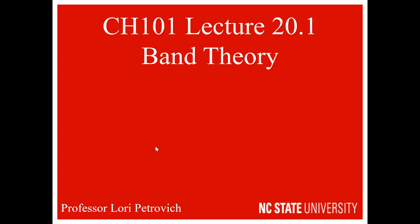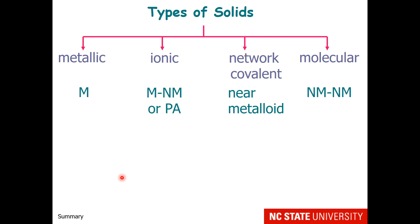Chapter 8 continues with Band Theory. Our eventual goal from this chapter is to identify different types of solids: metallic solids composed of metals, ionic solids composed of metals and nonmetals or polyatomic ions, network covalent solids, and molecular solids which are composed of nonmetals. Our goal will be to identify what kind of solid is present and rank them in a relative melting point.